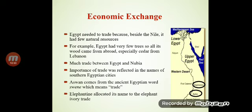Economic Exchange: Egypt needed to trade because, based on the Nile, it had few natural resources. For example, Egypt had very few trees, so all its wood came from abroad, especially cedar from Lebanon. There was much trade between Egypt and Nubia. The importance of trade was reflected in the names of southern Egyptian cities. Aswan comes from the ancient Egyptian word meaning 'trade.' Elephantine allocated its name to the elephant ivory trade.